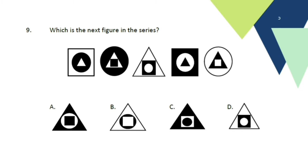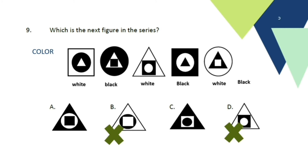Now we move on to patterns — which is the next figure in the series? The most obvious pattern is the color of the biggest shape: white, black, white, black, white. So the next color must be black, making letters B and D automatically wrong. Then let us look at the shapes — all choices are triangles, so we move on to the next shape inside: circle, triangle, square, circle, triangle. The next shape must be square. So the answer must be letter C.